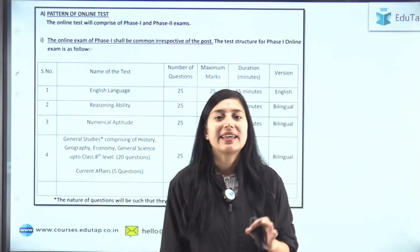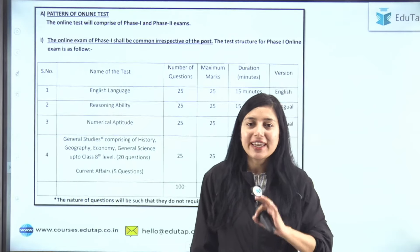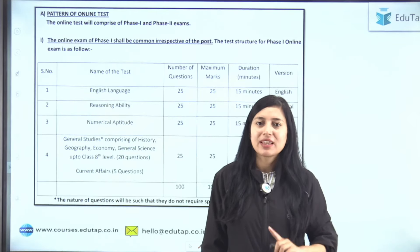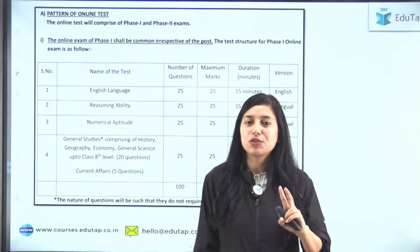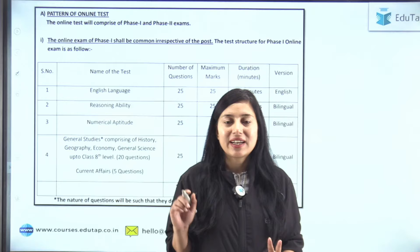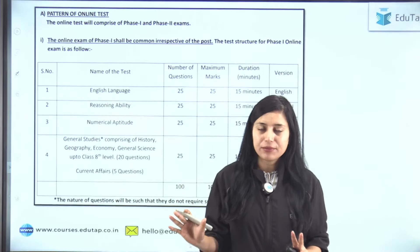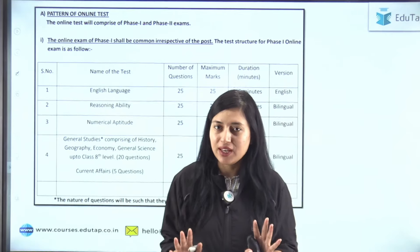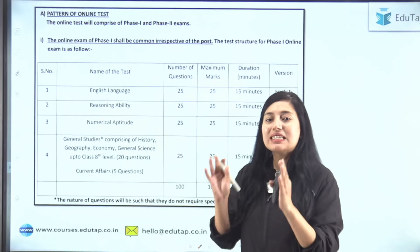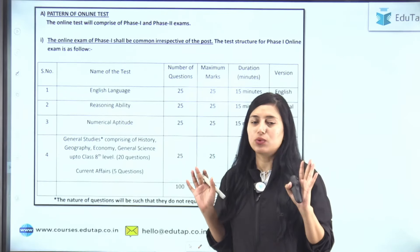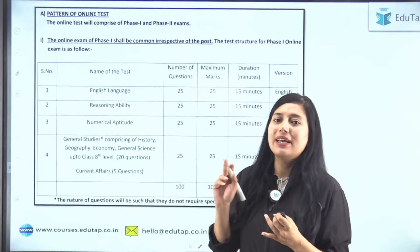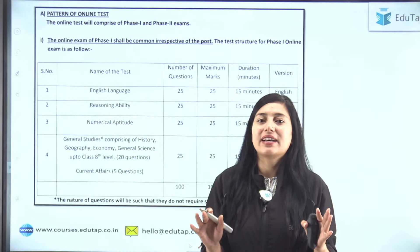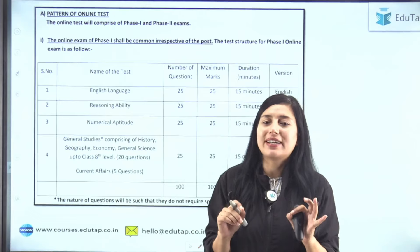FCI ka jo exam hai woh do phase mein hota hai. First we have Phase 1. Phase 1 clear karo ge, then you will be eligible for Phase 2. There is no interview — only you have to clear these two phases. Phase 1 ka jo pattern hai, that is same for all category students, be you are applying from General, Accounts, Depot, or Technical — koi bhi category mein aap apply kar raha ho, Phase 1 ka pattern same hai.